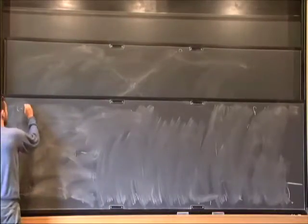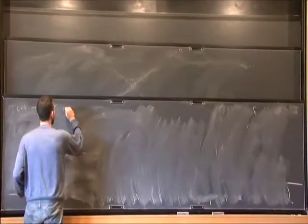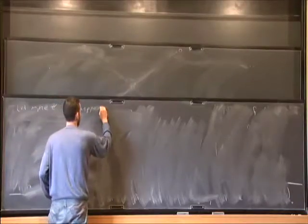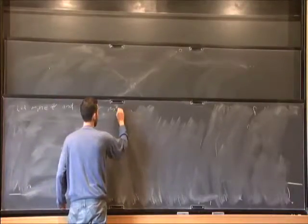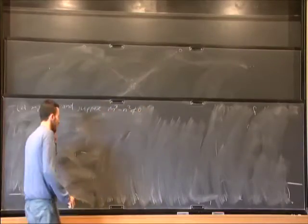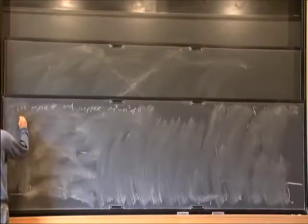I will discuss the following question. Let m and n be integers, and suppose that 2^m - 3^n is non-zero. I'm interested in the question: how small can this difference be in terms of m and n?